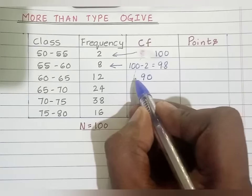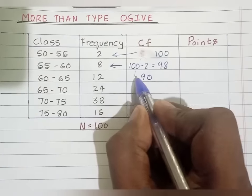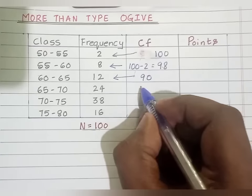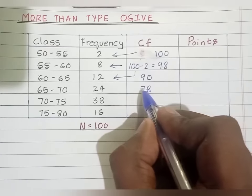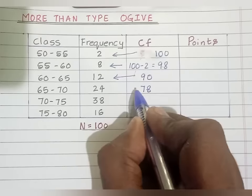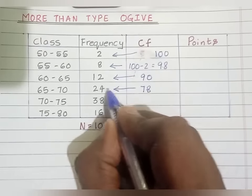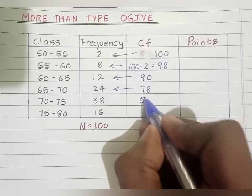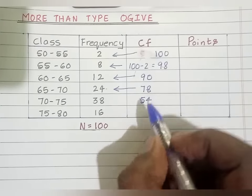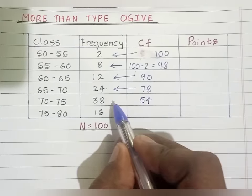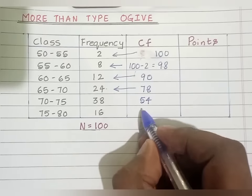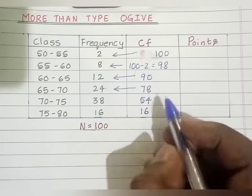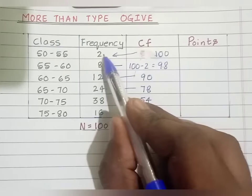To get the next number: 90 minus 12 is 78. To get the next: 78 minus 24 gives 54. Then 54 minus 38 gives 16. Since the values are consistent, this is correct. For more than type, you need to find the value of N, then subtract the frequencies from the frequency table.